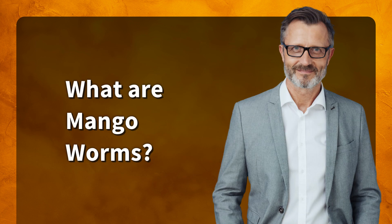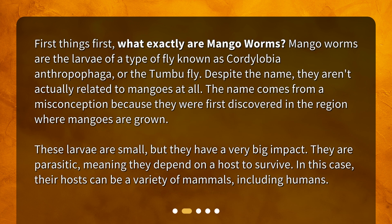What exactly are mango worms? Mango worms are the larva of a type of fly known as Cordylobia anthropophaga, or the tumbu fly. Despite the name, they aren't actually related to mangoes at all. The name comes from a misconception because they were first discovered in the region where mangoes are grown.